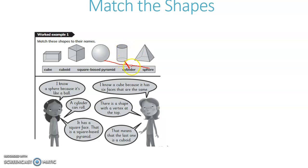A curved surface is a cylinder. I know a cube because it has 6 faces that are the same. So, 6 faces: 1, 2, 3, 4, 5, 6 — all faces the same. It's a cube. So, this is a cube.